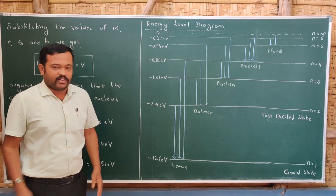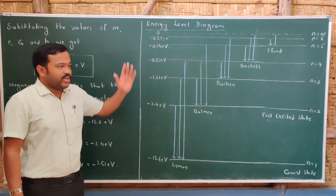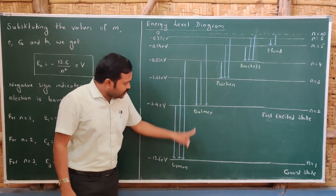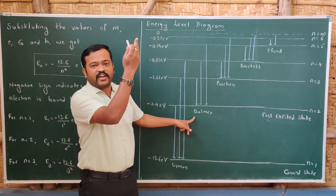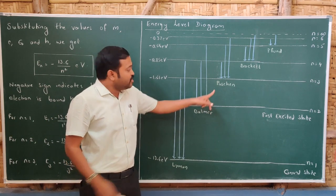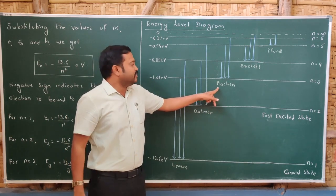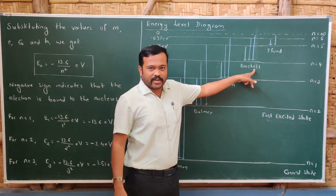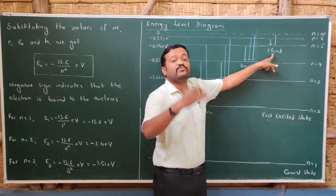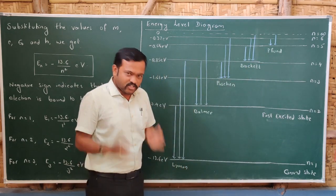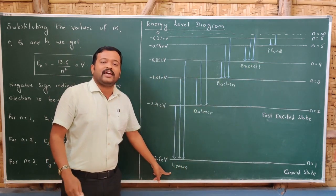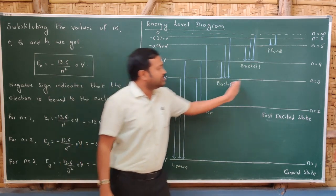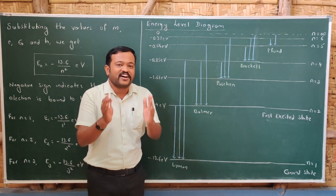Transitions take place from higher energy levels to lower energy levels. If a transition occurs from any higher level to the first energy level, the series is called the Lyman series. Transitions to the second level give the Balmer series; to the third, the Paschen series; to the fourth, the Brackett series; and to the fifth, the Pfund series. The Lyman series lies in the ultraviolet region, the Balmer series in the visible region, and the Paschen, Brackett, and Pfund series all lie in the infrared region.